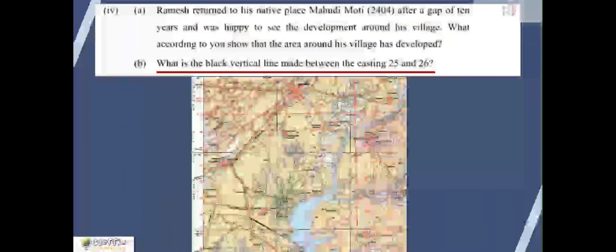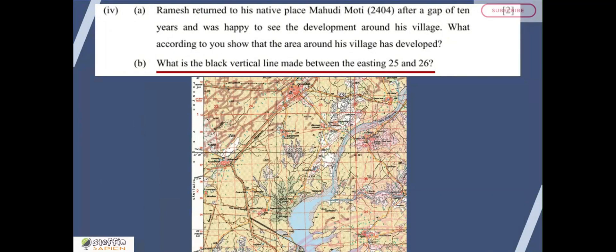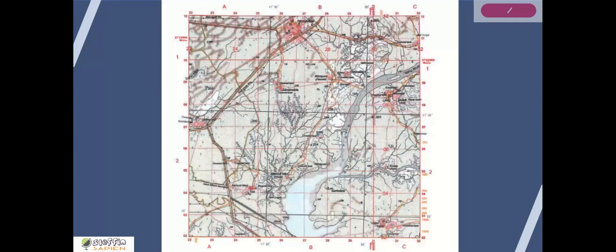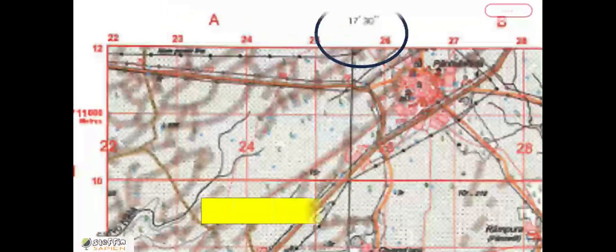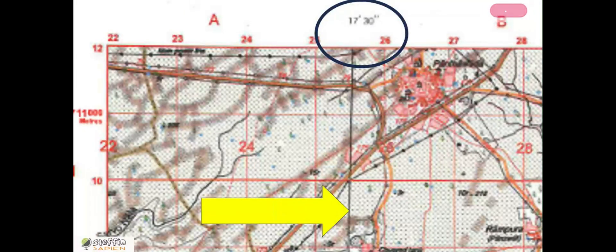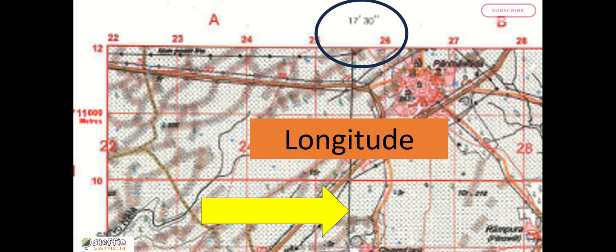Next question: What is the black vertical line made between Eastings 25 and 26? These are the two Eastings, 25 and 26 and the black line in between. Here you can see the black line and something is written on the top: 17 minutes 30 seconds. We already know that black vertical lines are longitudes and the answer is longitude.